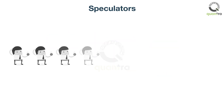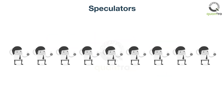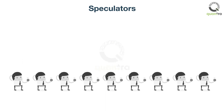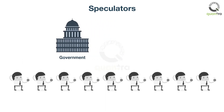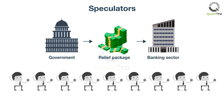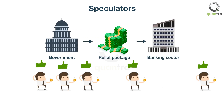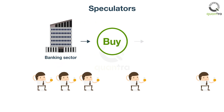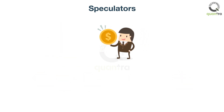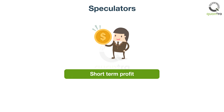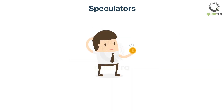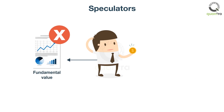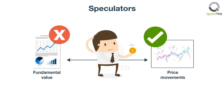The number of speculators increases in the market when some event is expected. For example, consider a situation where the ruling government suddenly announces a relief package for the banking sector. Traders who believe it to be positive news would jump in the market to buy stock belonging to the banking sector and profit from the short-term movement. They usually do not maintain open positions for a very long time; their positions are only meant to make a short-term profit. Often, speculators pay little attention to the fundamental value of a security and instead focus purely on price movements. They expect higher returns from their positions than investors.